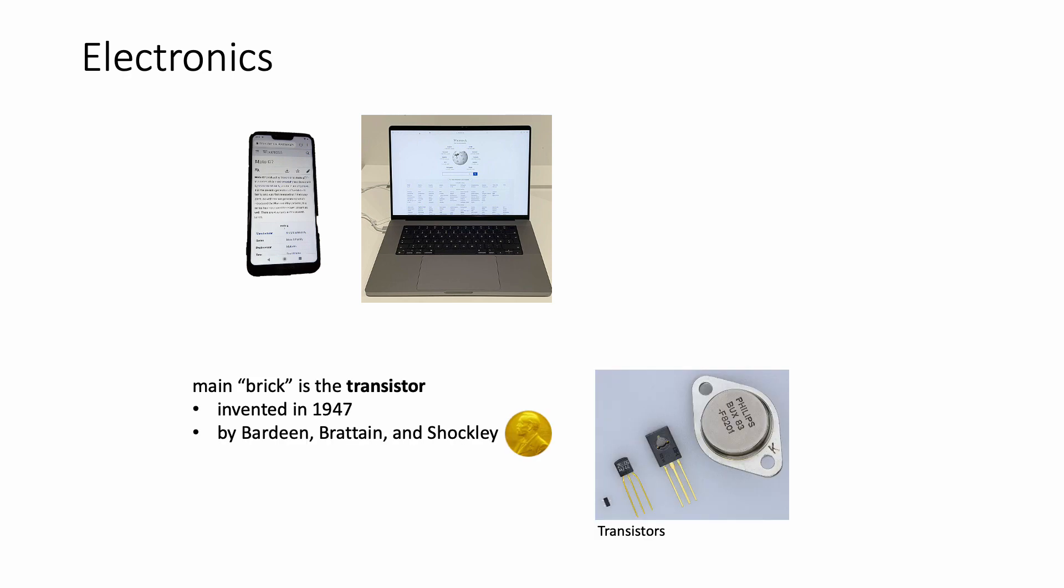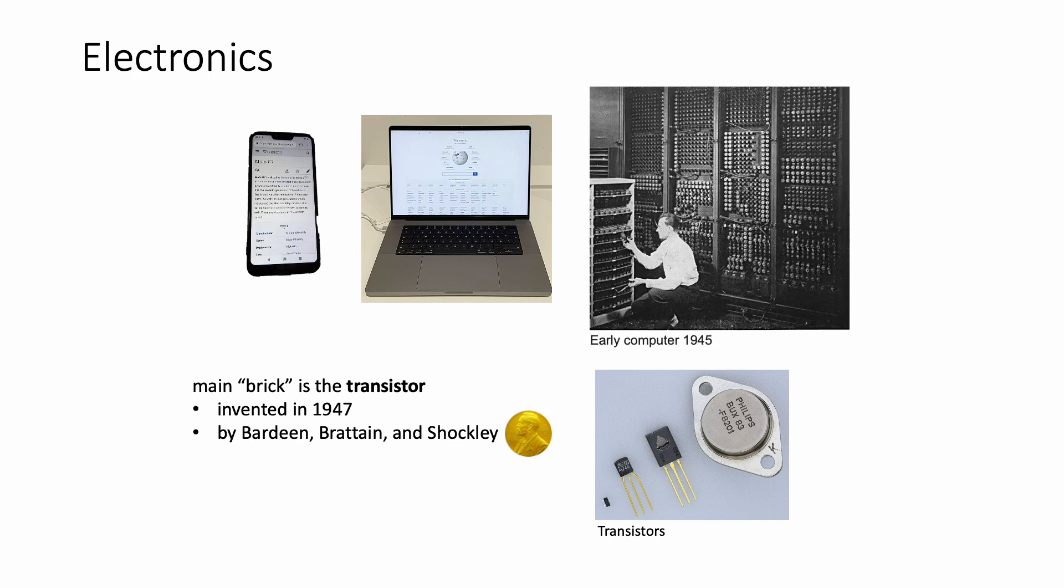Here is another example of what condensed matter physics made possible. Electronics. We're all very familiar with computers and smartphones, but do you know what is the main brick of electronics? The transistor. This is a very small circuit that works more or less like a switch. The transistor allowed to go from computers that look like that to those that we have today. Transistors are much smaller than vacuum tubes used earlier, allowing to pack billions of them in the size of a smartphone, achieving computational powers that were simply impossible before.